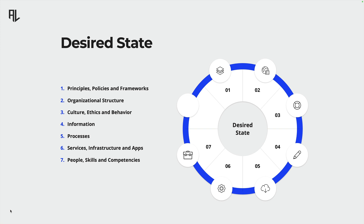Next is the organizational structure. This defines how your security team is built, how it interacts with each other and with other departments, and where decision-making power lies. A well-defined structure ensures that everyone knows their role in maintaining security.